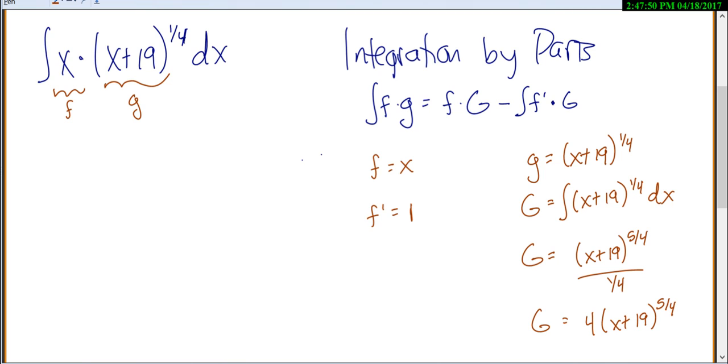Or we could change that to 4/5 times (x plus 19) to the 5/4. So again, do u substitution on your own and make sure you get to the same end. Sorry, I wasn't paying enough attention. You divide by your new power of 5/4, which means that this is 4/5.